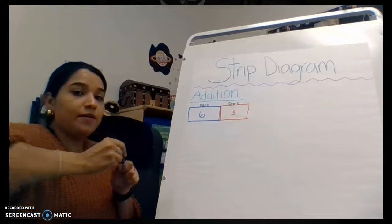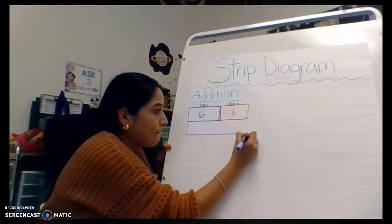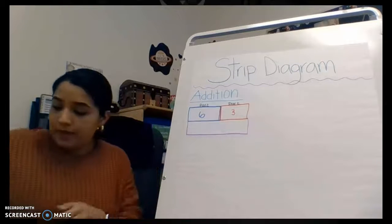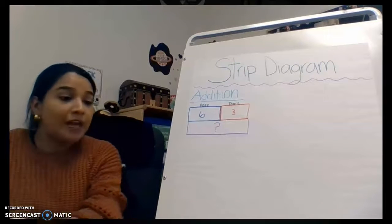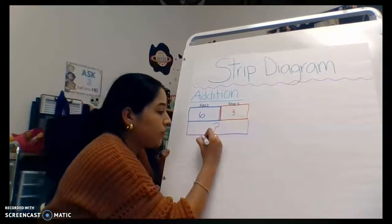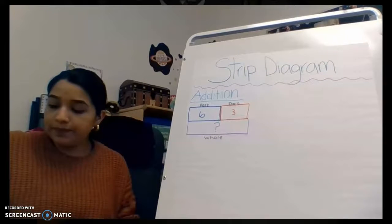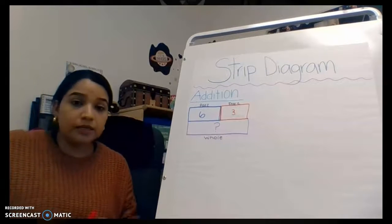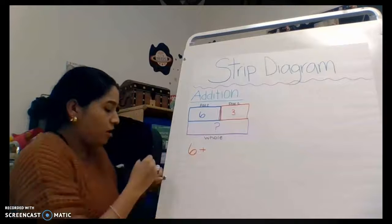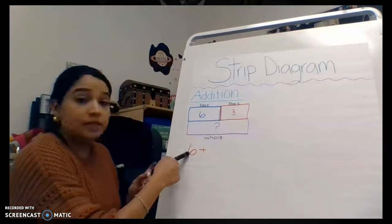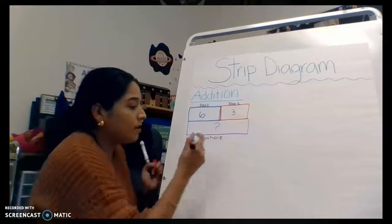Then we have our whole. This is our whole because we wanted to know in the word problem how many birds are in the tree. So six plus three — we have six blue birds and three red birds — that equals our whole number.